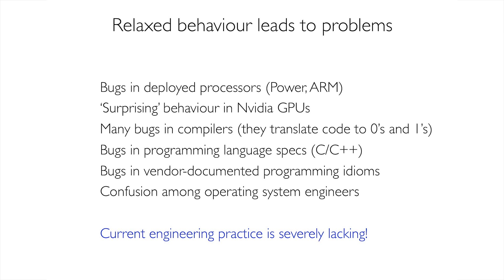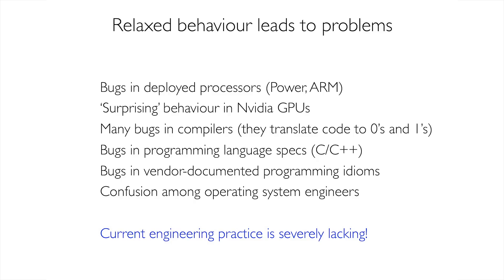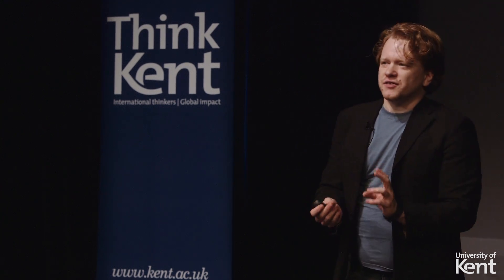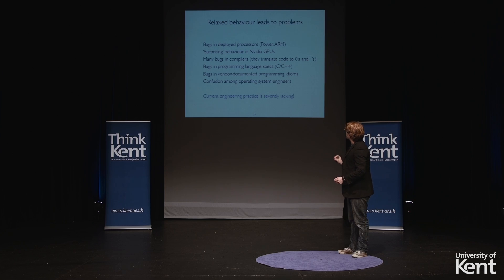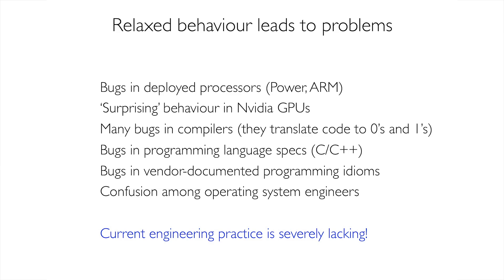We call this relaxed behavior, and programmer intuition broken by it leads to widespread problems throughout the computer system. We have bugs in deployed processors from Power and ARM, surprising behavior in Nvidia graphics processors, and lots of bugs in compilers — the software that takes your program and turns it into machine code. We have bugs in the specifications of programming languages, bugs in vendor-documented programming idioms and educational materials, and confusion amongst the writers of operating systems.